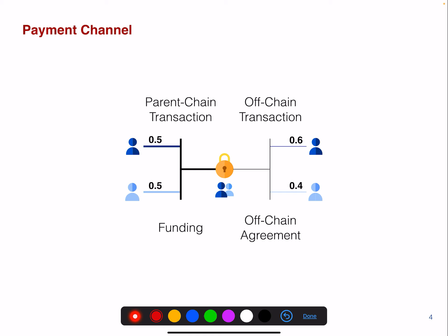So how does this look? Well, here you have a different representation of a payment channel. So you have a so-called parent chain. So that's the blockchain transaction. And you have an off-chain. This is the chain that you consider to be off the chain. And in this parent chain transaction here, this is actually an on-chain transaction.